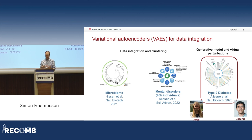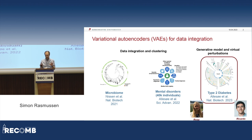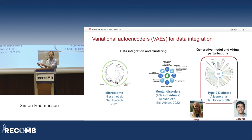We kind of started out doing this on microbiome data. Then last year, we were working on a dataset with both genetics and also some health data on 40,000 individuals that we published as well. What I will talk about today is our latest paper, where we actually use the generative model of the VAE and also add virtual perturbations.